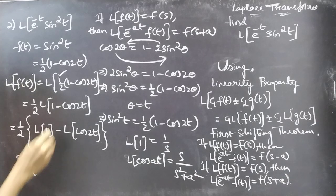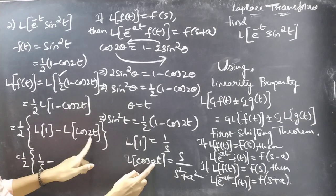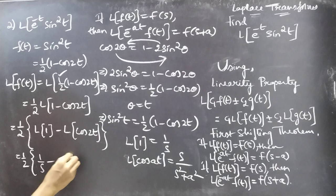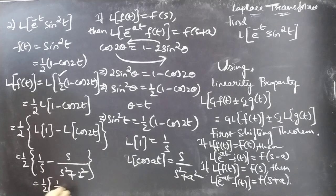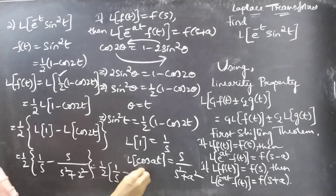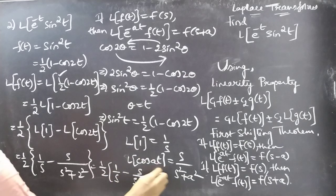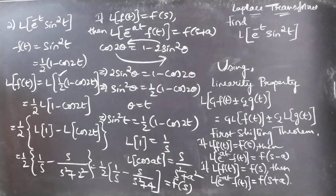Then you'll get 1 by 2 into: L of 1 is 1 by s, and for a equal to 2, L of cos 2t equals s by s squared plus 4. So this gives 1 by 2 into 1 by s minus s by s squared plus 4, and this is our F(s).